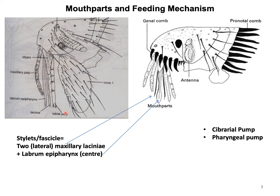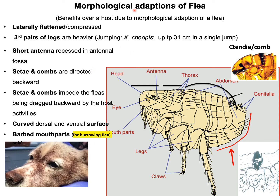The function of the maxillary palp and labial palp in the feeding mechanism is to locate the feeding site. When the fascicle is pushed towards the feeding site for sucking blood, the cutting action is done by the maxillae because they have tooth-like structures. Saliva passes from the hypopharynx to the labrum into the feeding site, and blood is sucked up. Two pumps are present: the cibarial pump sucks the blood after the pharyngeal region, and the pharyngeal pump pushes blood from the pharyngeal region to the midgut. Most fleas feed for only a few minutes before moving to another part of the host.